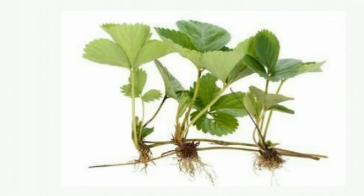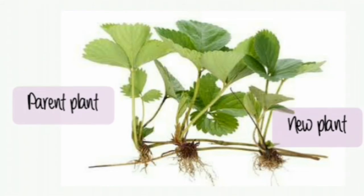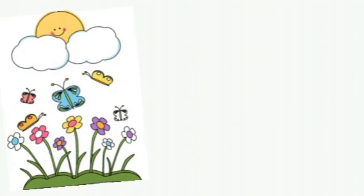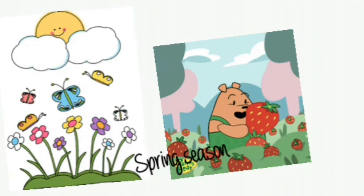The strawberry plant is a runner plant. The new plants, or clones, are a short distance away from the parent plant, and this series of new plants can colonize the whole farm or lawn. Lawn grass and spider grass are the best examples of runner plants — they also grow in a similar way. The best time to plant strawberries is in the spring season.